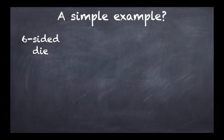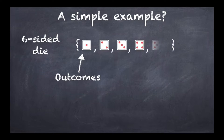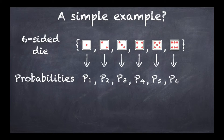If we throw the die once, then the set of all possible outcomes is going to be the number of spots that can be looked at once the die has settled down. What people do is that once they have done this, they can assign probabilities to each of these outcomes.